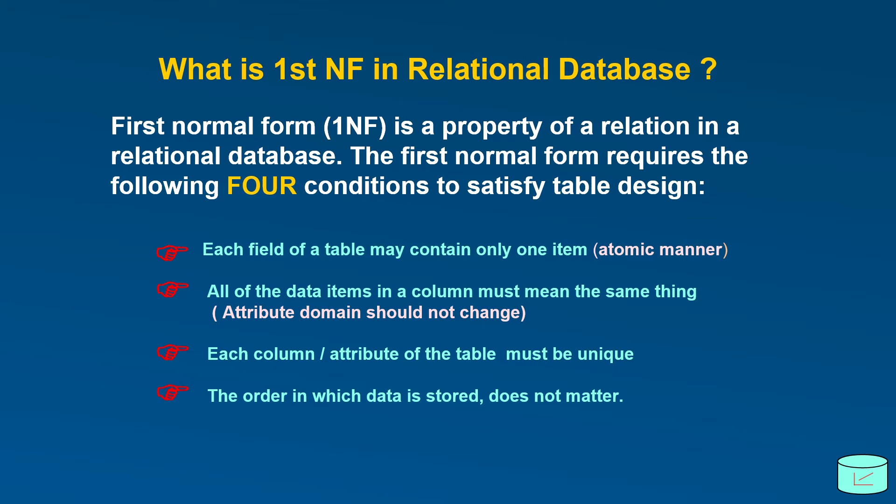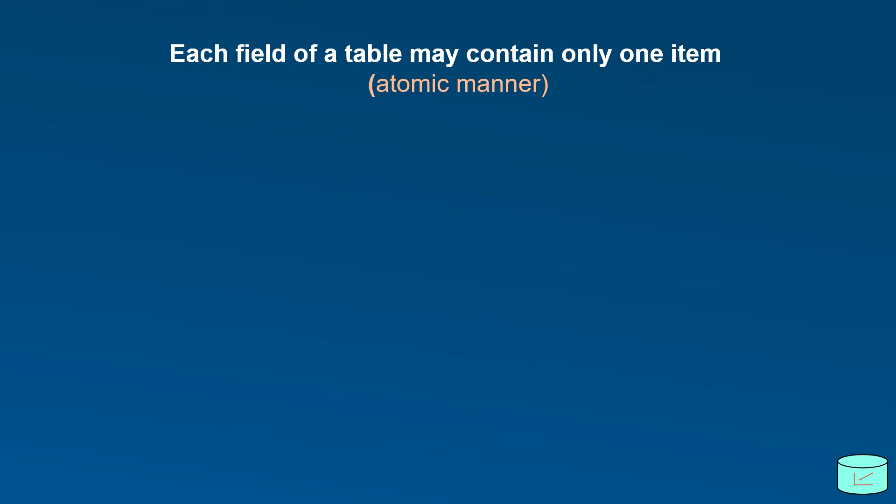Now let's go through one condition at a time. With example, try to understand one by one. So each field of a table contain only one item. In other words, each field in a column should not contain multiple values.